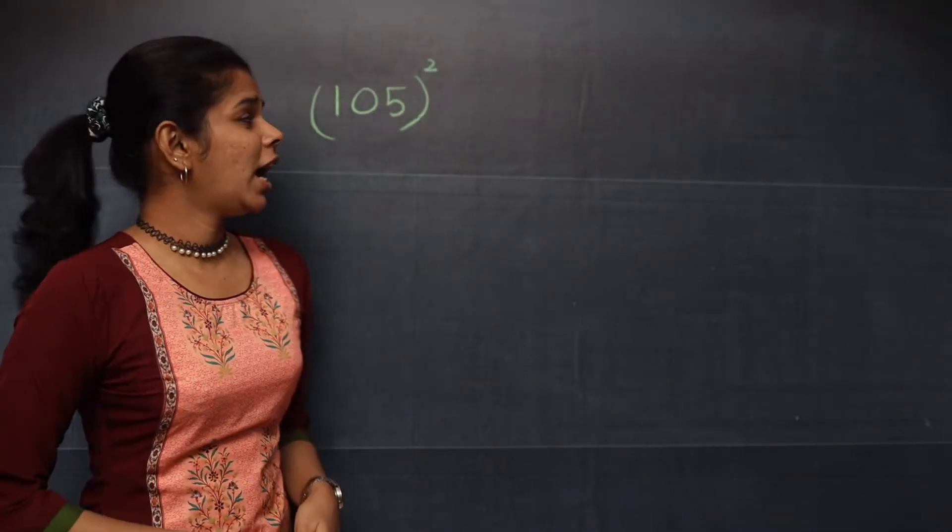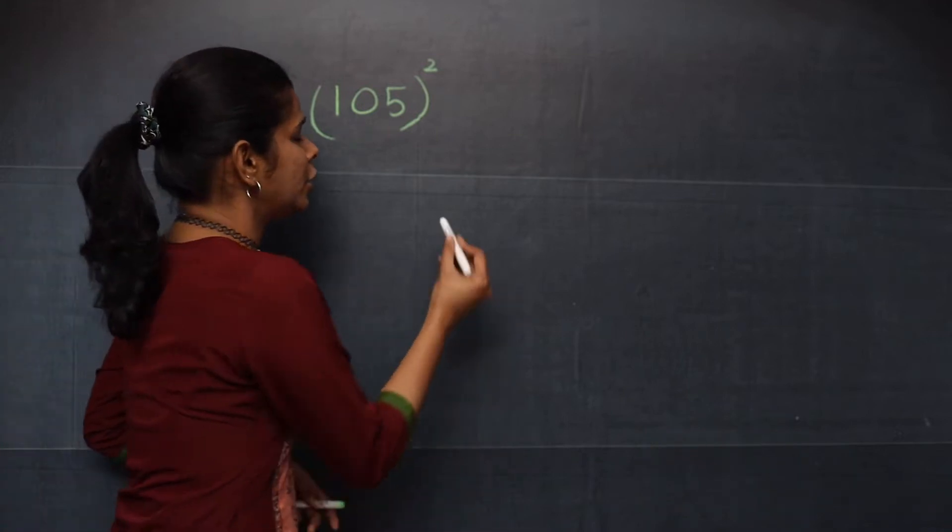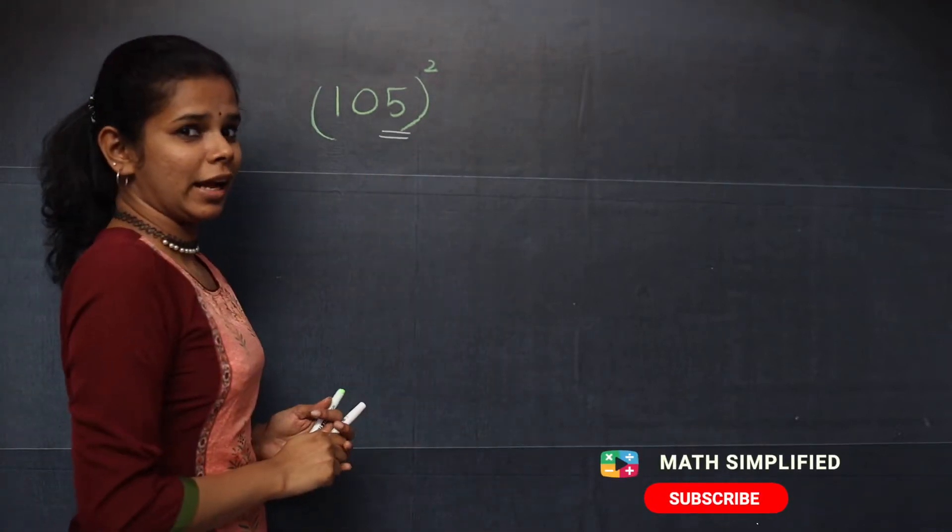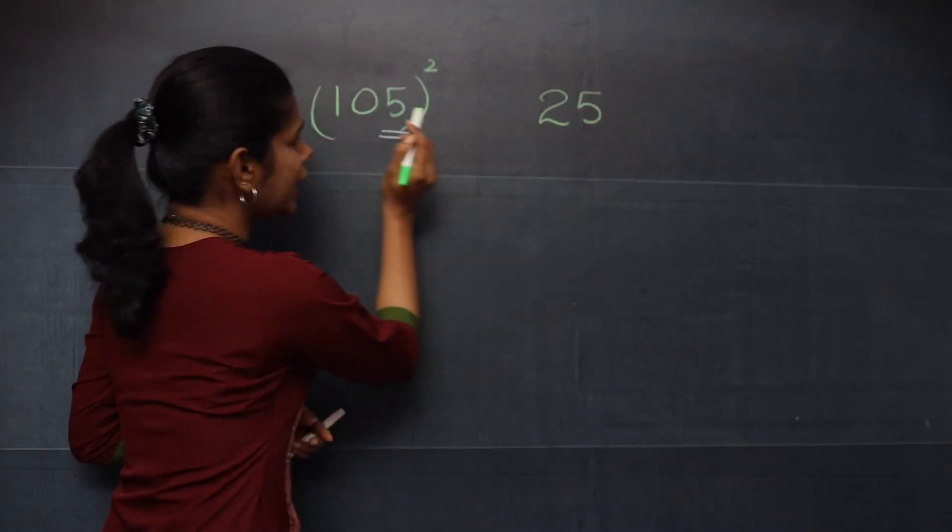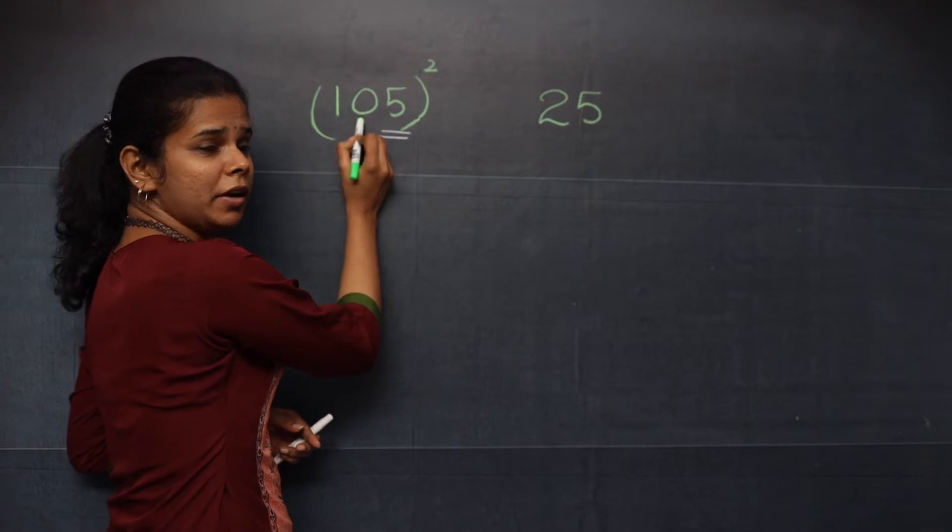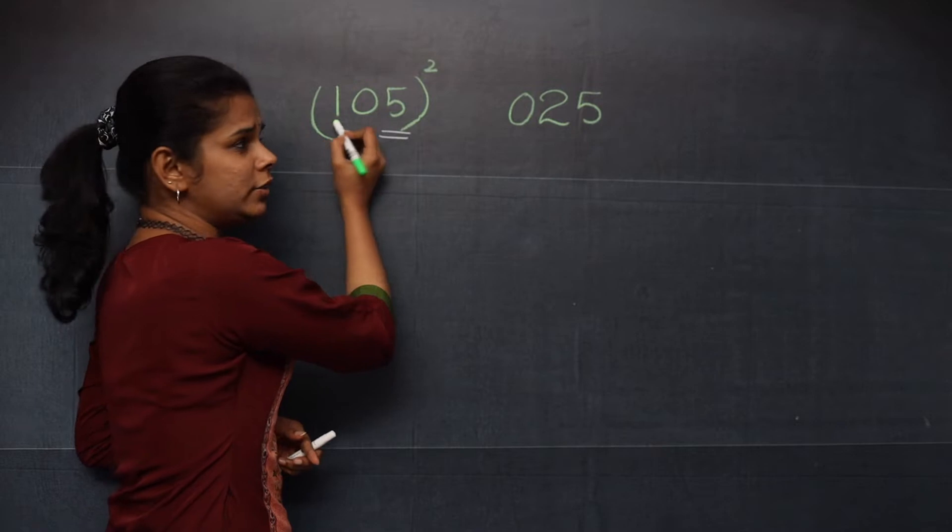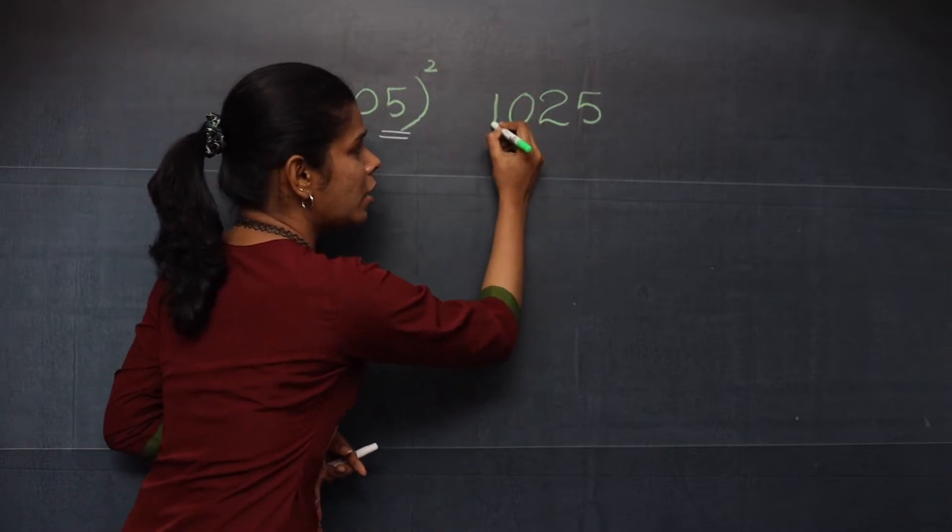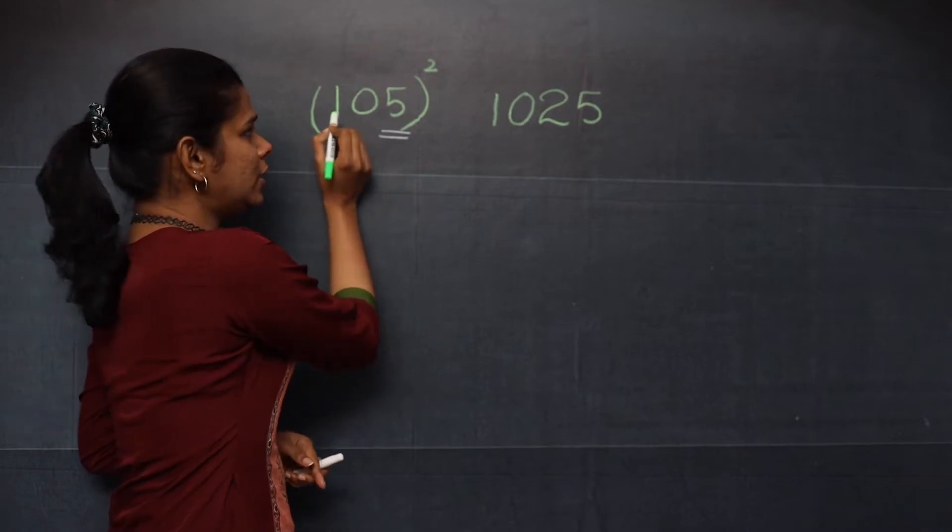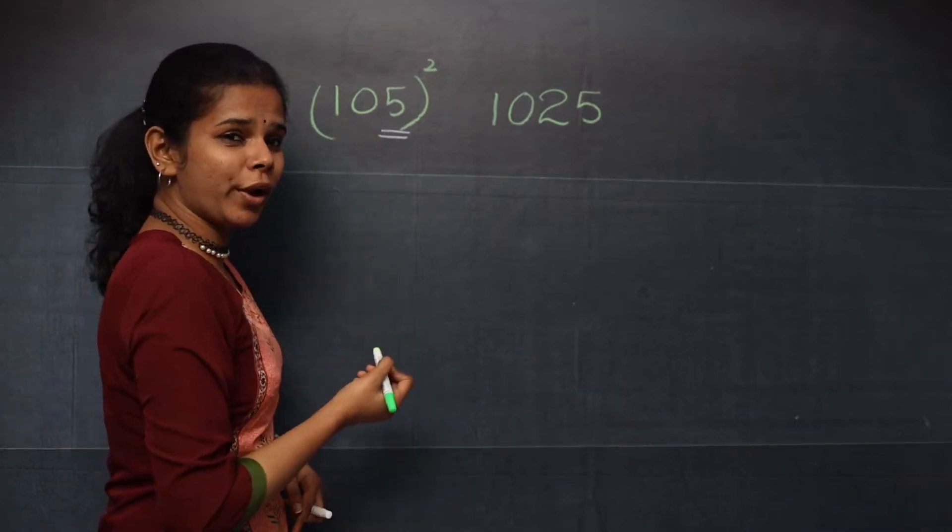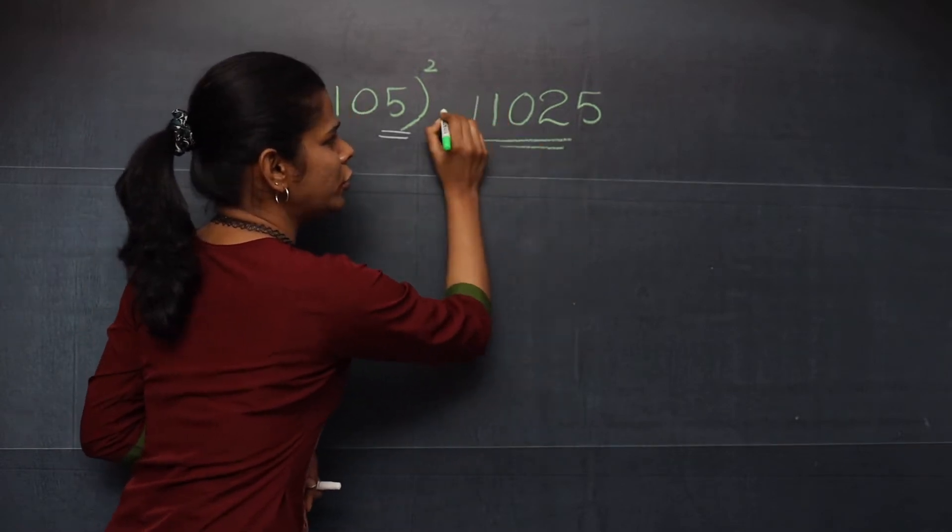First let's find what is 105, the whole square. The first step is that you need to find what is 5 square and you know that it is 25. After that you will write the number which is there in the middle that is 0 and then you have 1 that also you will write here. After that you will take the square of the first number. Here the first number is 1. What is 1 square? It is again 1. So this becomes your answer.